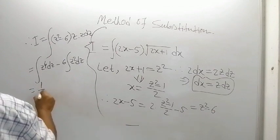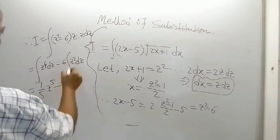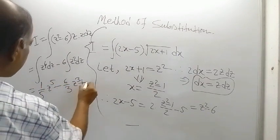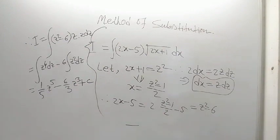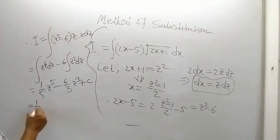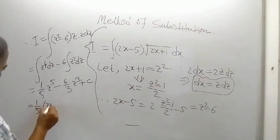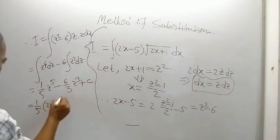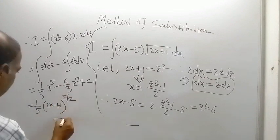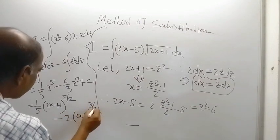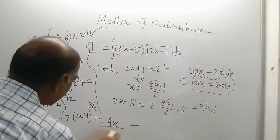The integration is one-fifth z to the power 5 minus 6/3 z cubed, which is 2z cubed, plus constant C. Z is root of (2x+1). Now put the expression for z to get the result in terms of x: (2x+1)^(5/2) divided by (5/2) minus 2(2x+1)^(3/2) divided by (3/2) plus C. This is the answer.